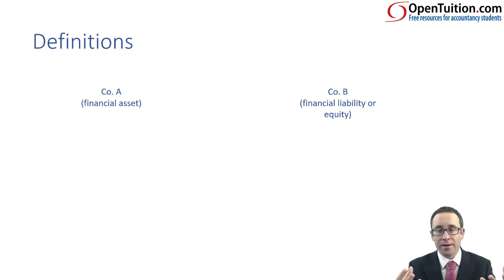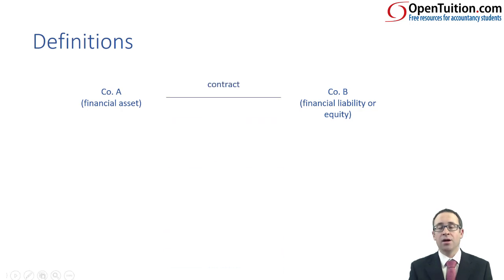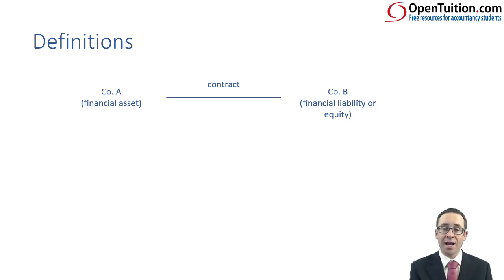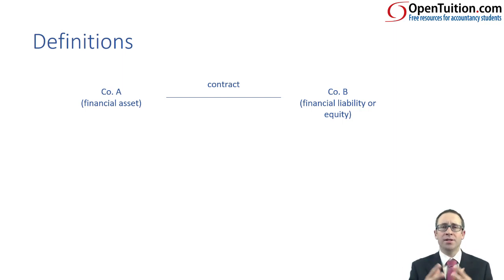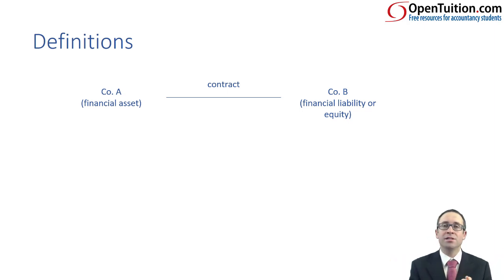It's up to you to determine which company we are doing the accounting for — is it company A or company B? The key point is that there needs to be some form of contract, whether written, verbal, or implied between the two. That contract gives rise to a financial asset in company A and a liability or equity in company B, which is where you have the presentation issues from company B's perspective — is it a liability or is it equity? What people do is they tend to panic, maybe rightly so, given the complexity of the standard.